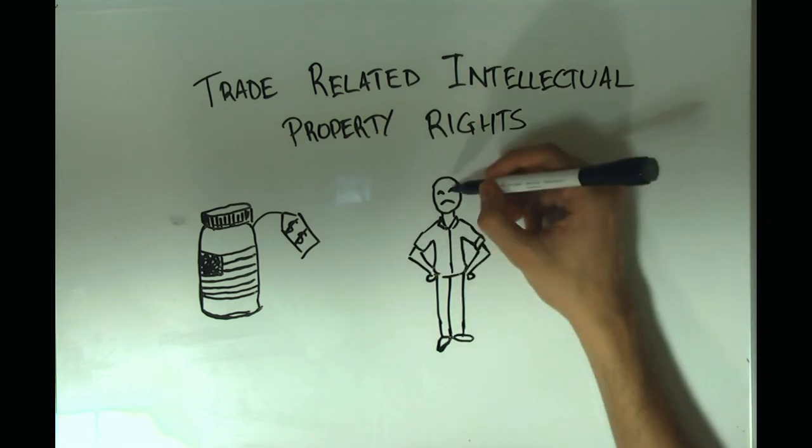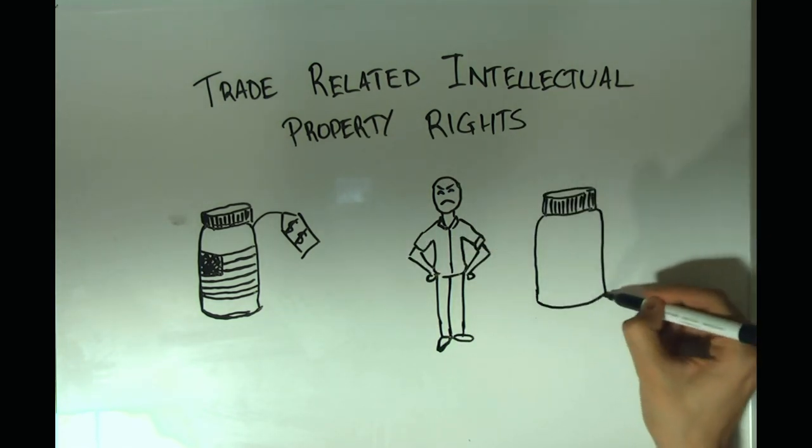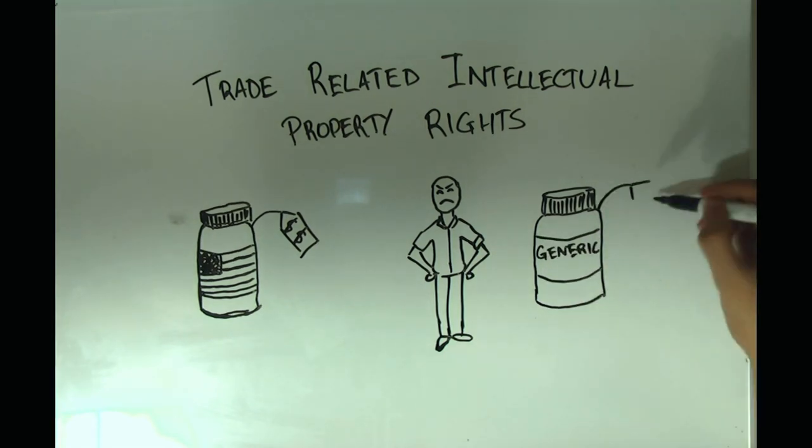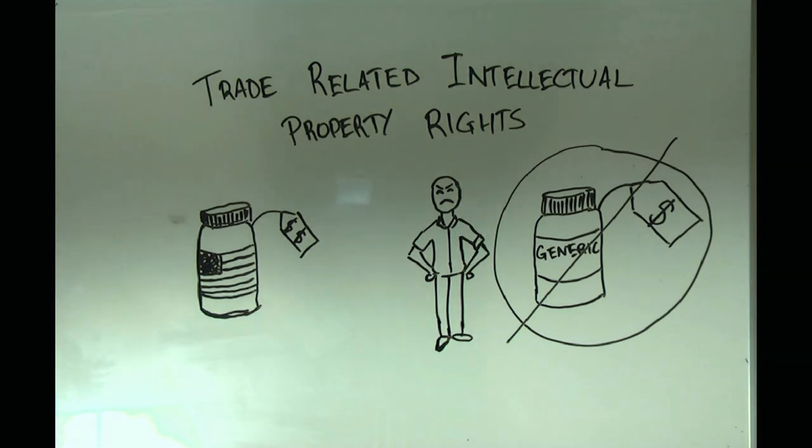There is a classic and tragic example of these property rights in relation to medicine. A study published in the International Journal of Health Services in 2015 found that the stronger intellectual property rights were for important drugs, the harder it was for people in poor countries to access them. In other words, TRIPS made it harder for poor populations in the developing world to receive treatment they needed.